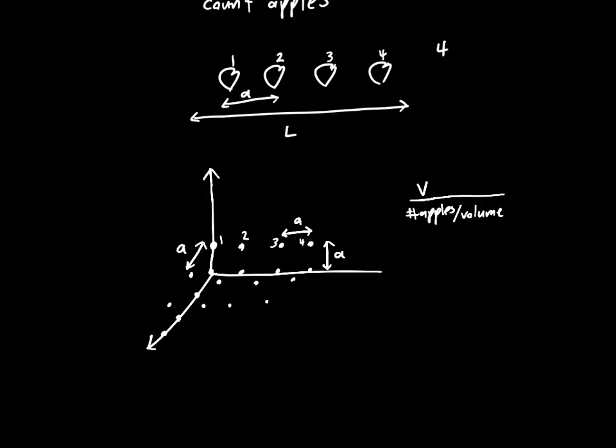And we can count the number of apples per volume. So we can say that, well, since each of these apples is separated by from its neighbor by a distance A, then we can just draw a cube around one of these apples of side length A, and say that the volume density of a single apple is just one apple divided by a cubed volume. Or you could count up two apples or ten apples. It doesn't really matter how you did it.